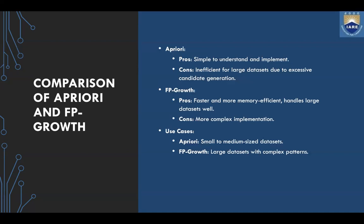Comparing both algorithms: the Apriori algorithm is simple to understand and implement, but inefficient for large datasets due to excessive candidate generation. The FP Growth algorithm is faster and more memory efficient and handles large datasets well, but has a more complex implementation and is harder to understand. For use cases, Apriori is used for small to medium-sized datasets, whereas FP Growth can also handle small to medium datasets but is generally preferred for large datasets due to its efficiency.